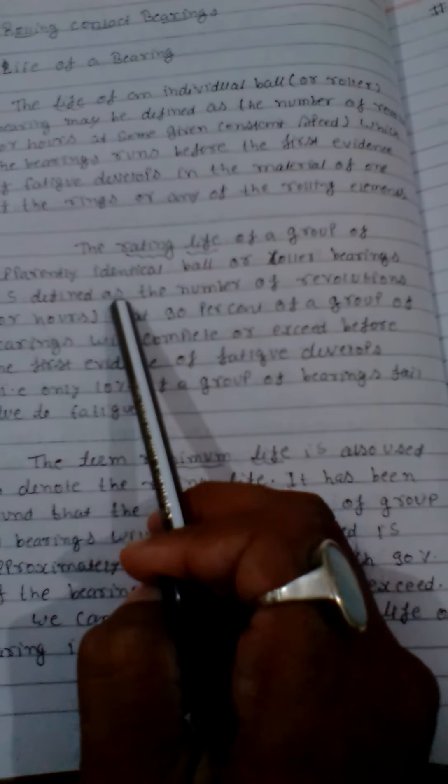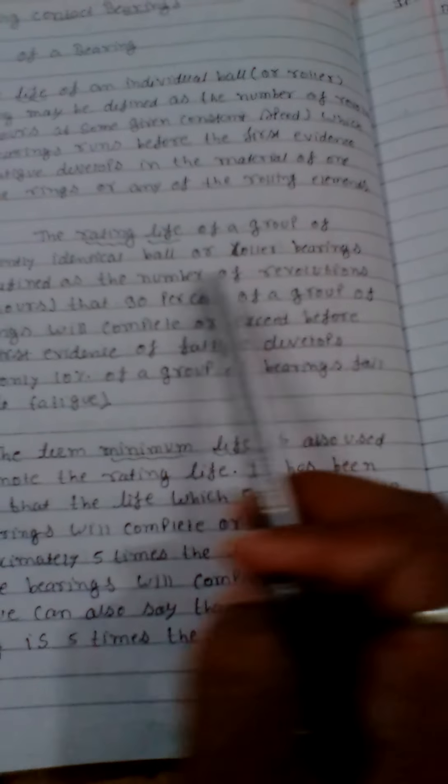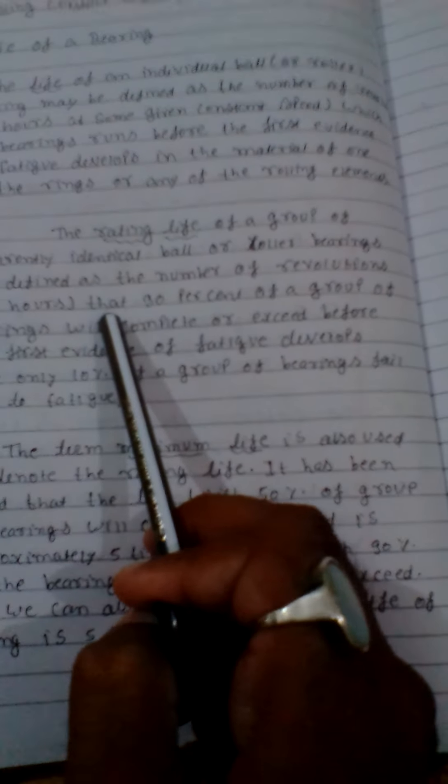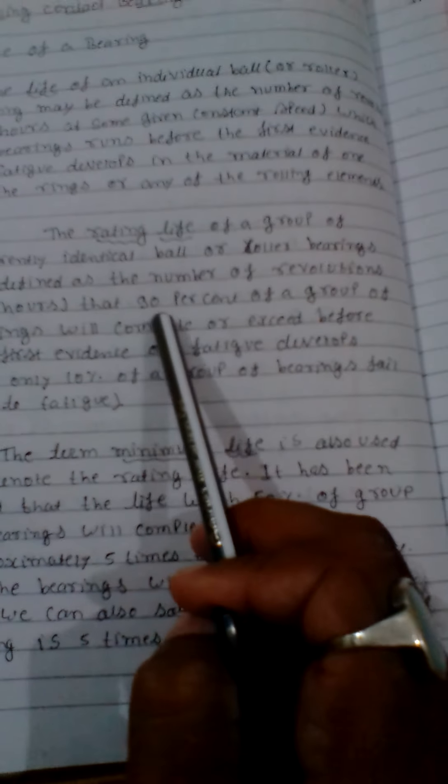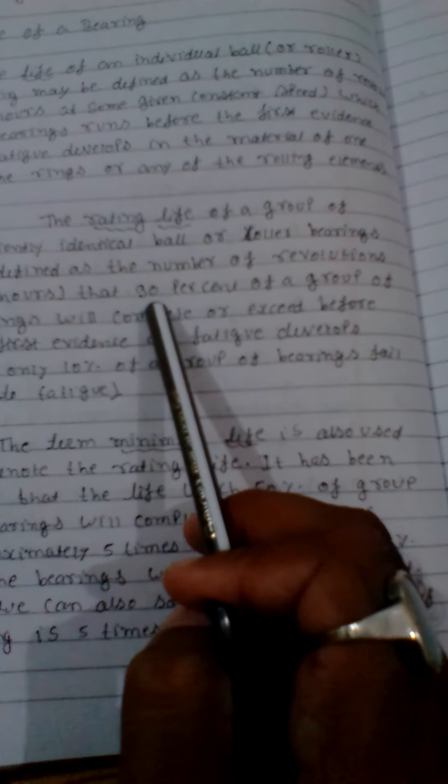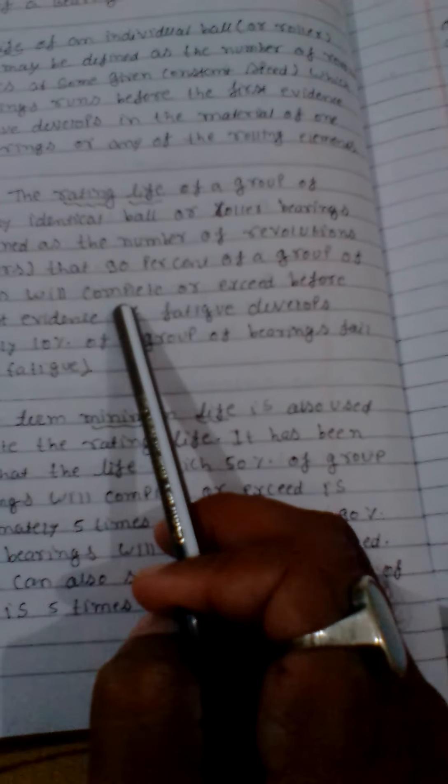It is defined as the number of revolutions or hours that 90% of a group of bearings will complete or exceed before the first evidence of fatigue development.